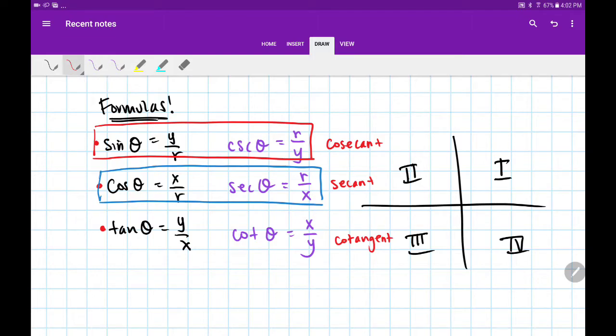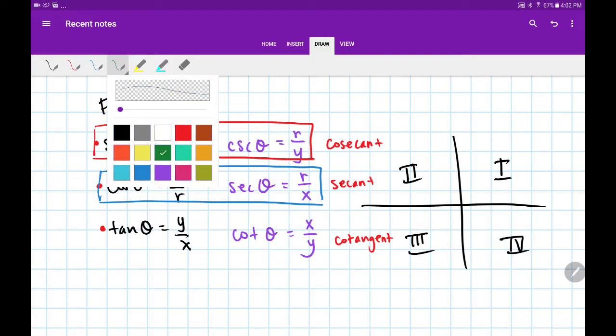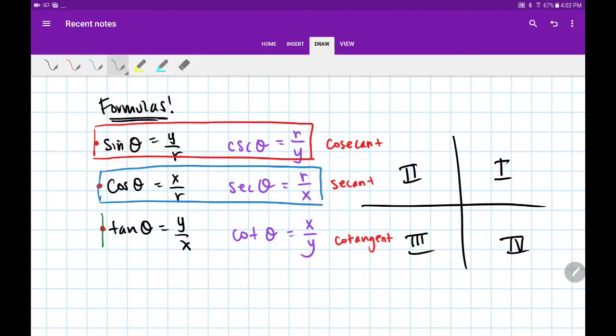And the reciprocal of tangent would be cotangent. So while tangent is y/x, cotangent is x/y.